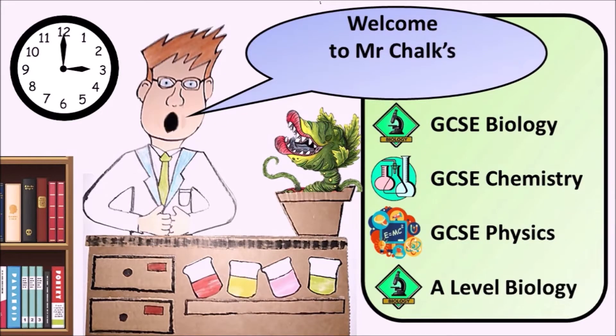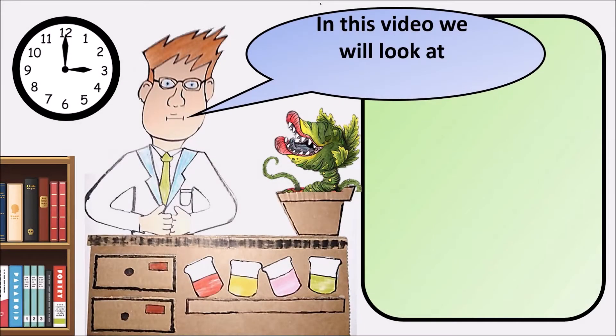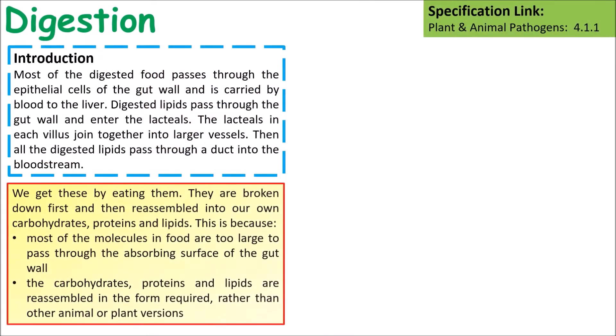Welcome to Mr Chalk's revision tips. In this video we will look at the structure of the digestive system, enzymes and nutrients found in food. Most of the digested food passes through epithelial cells in the gut wall and is carried into our blood. We need to start off by looking at the different nutrients that we find and need in the food we're digesting.